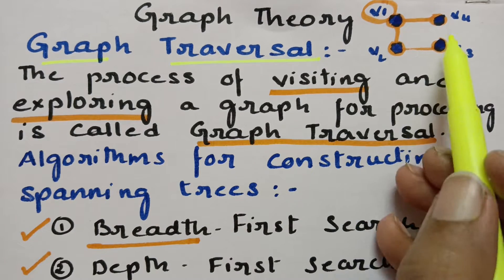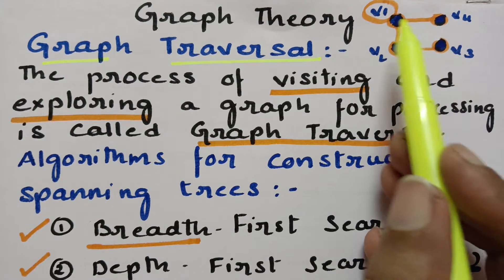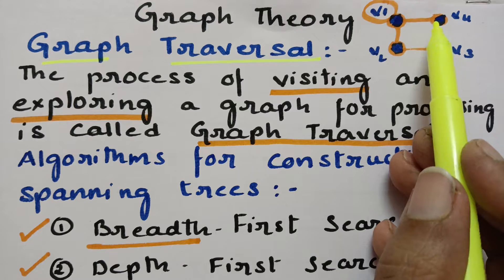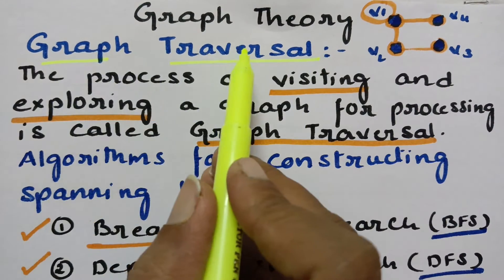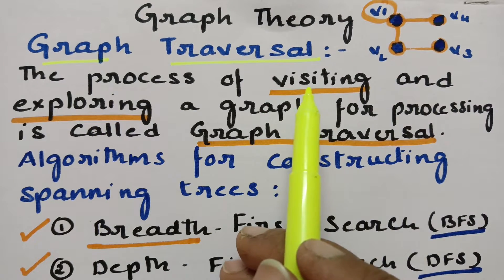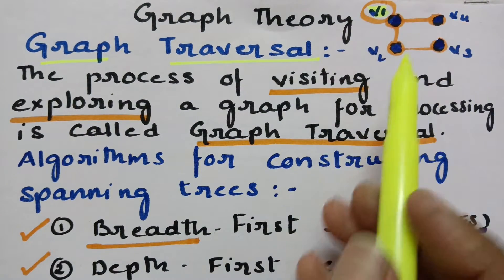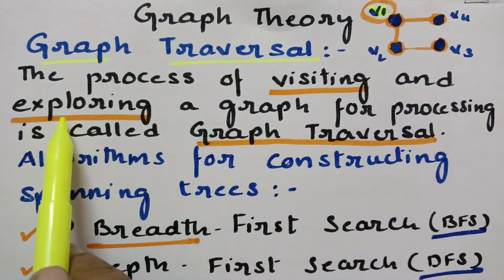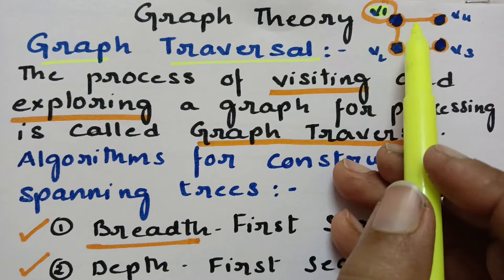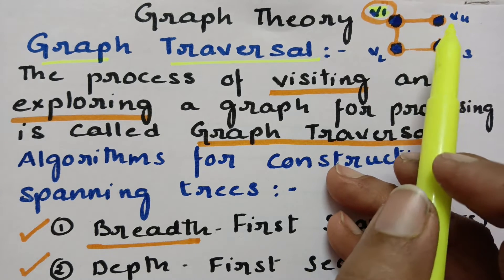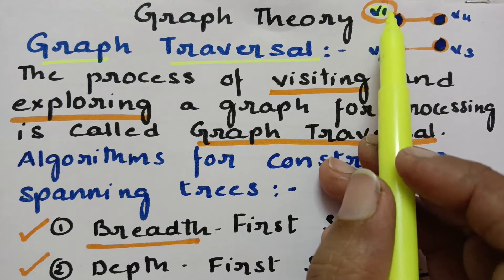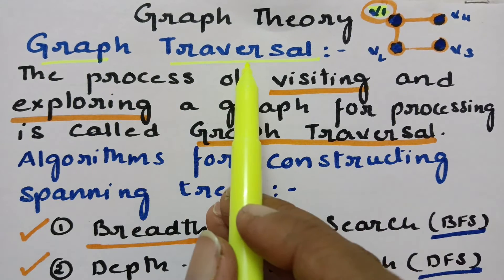Graph traversal is nothing but — if you take any graph, here there are four vertices and edges. Edges are the lines connecting between the vertices. Graph traversal means the process of visiting and exploring. Visiting means reaching to that vertex. After reaching to that vertex, we have to explore — that means we have to find out what are the adjacent edges and what are the neighboring vertices in and around the surroundings.